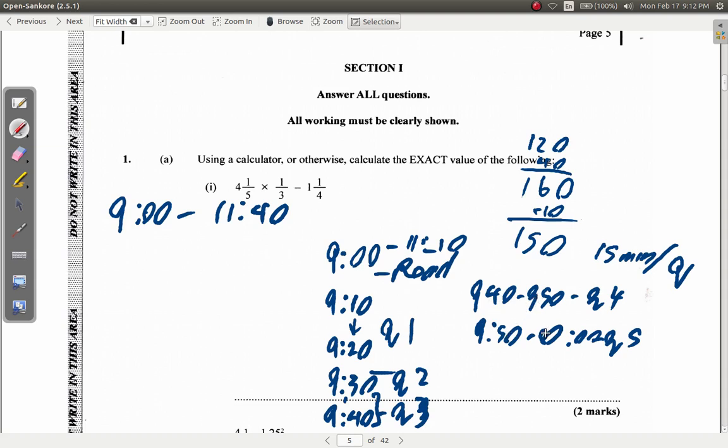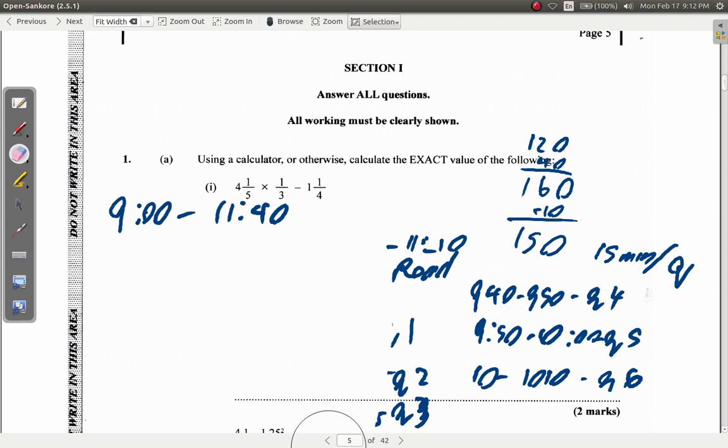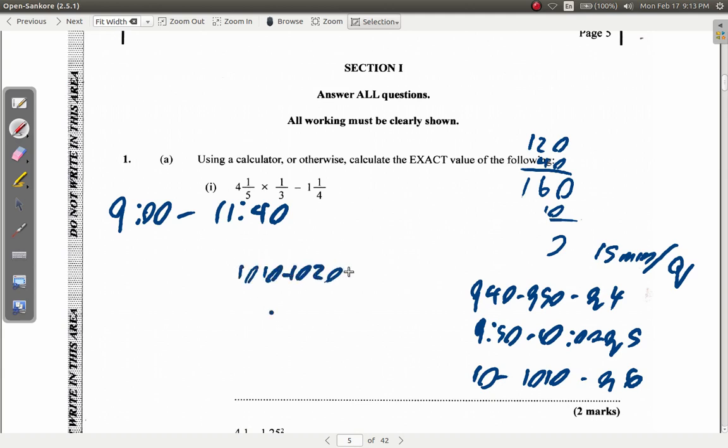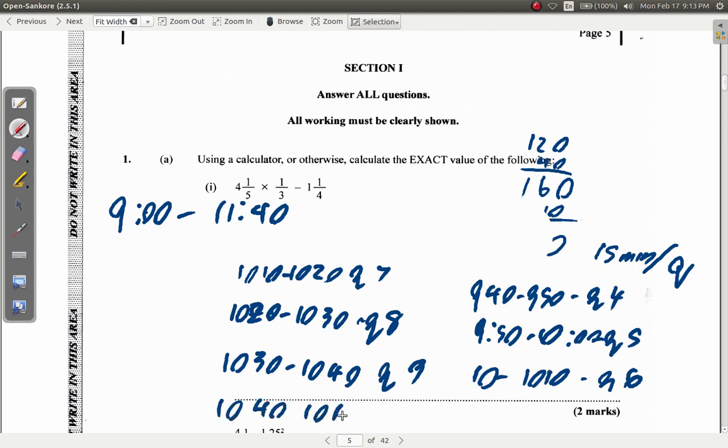Then from 10 to 10:10 that's question 6, 10:10 to 10:20 question 7, 10:20 to 10:30 question 8, 10:30 to 10:40 question 9, 10:40 to 10:50 you have question 10. Done.